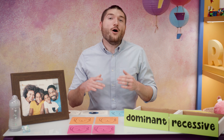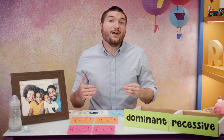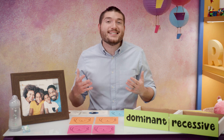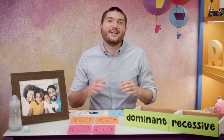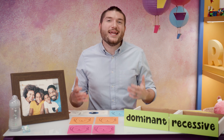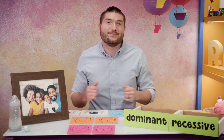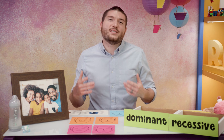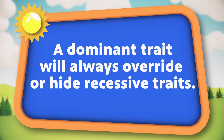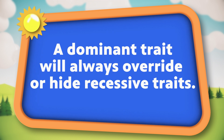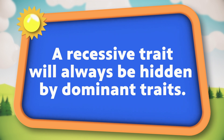Now that we understand traits and how they work, how are they passed down and what are the chances you will get a specific trait? The chances of getting a trait are based on whether the trait is dominant or recessive. Dominant traits will always override or hide recessive traits, even if only one parent has it. Recessive traits will be hidden by dominant traits.